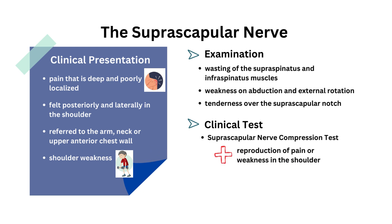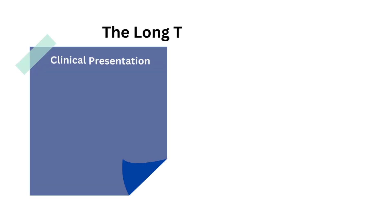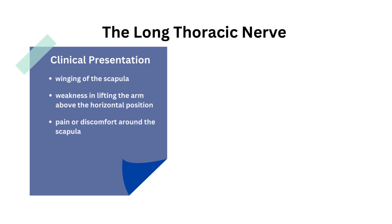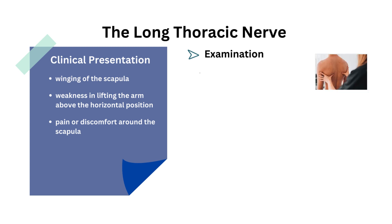Clinical features of long thoracic nerve entrapment include winging of the scapula, weakness in lifting the arm above the horizontal position, and pain or discomfort around the scapula. On examination, the most striking feature is winging of the scapula when pushing against a wall with both hands.